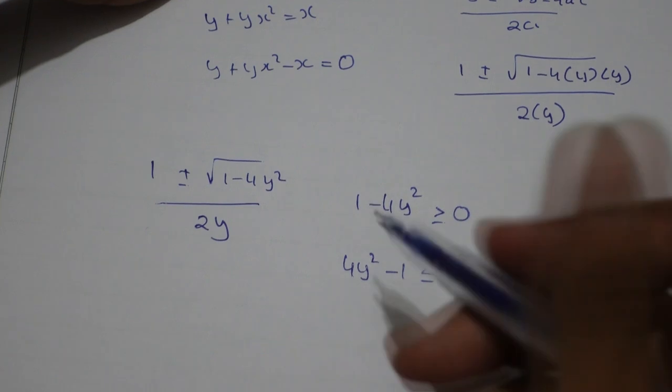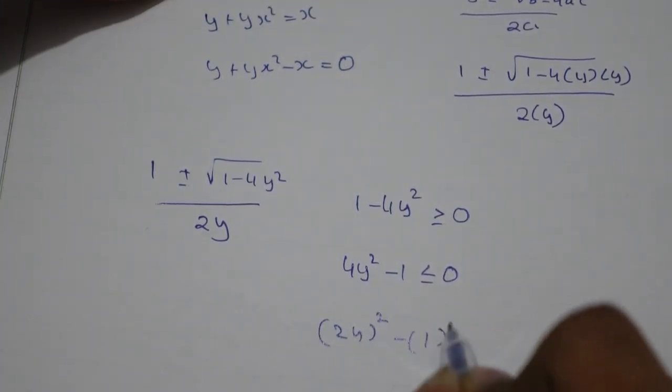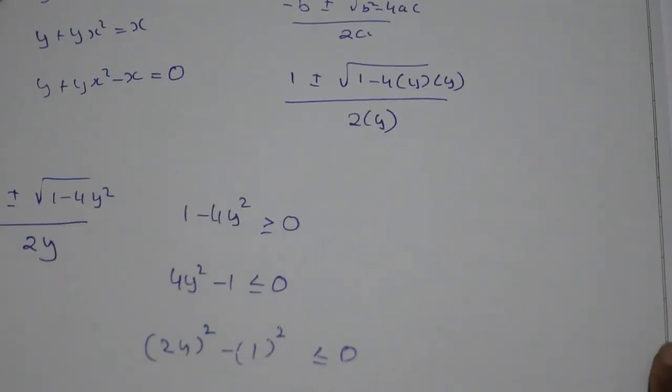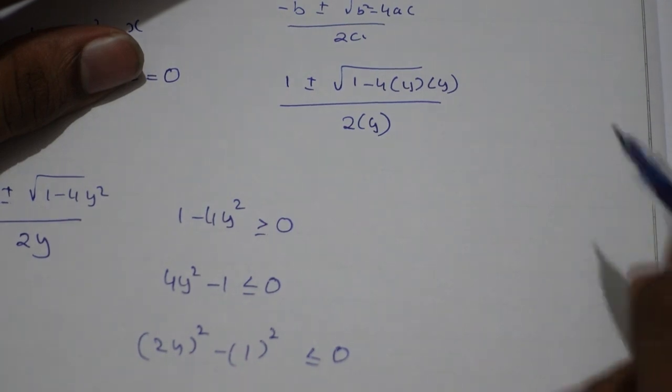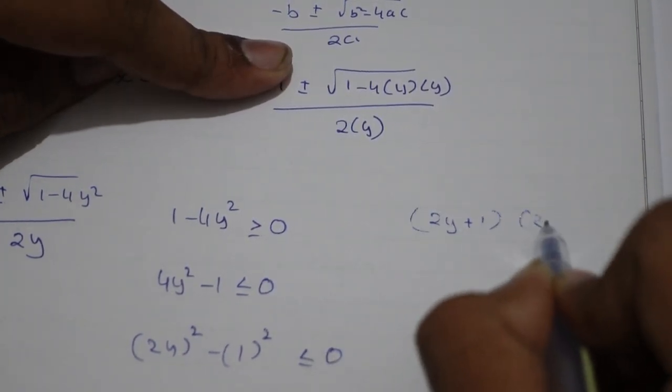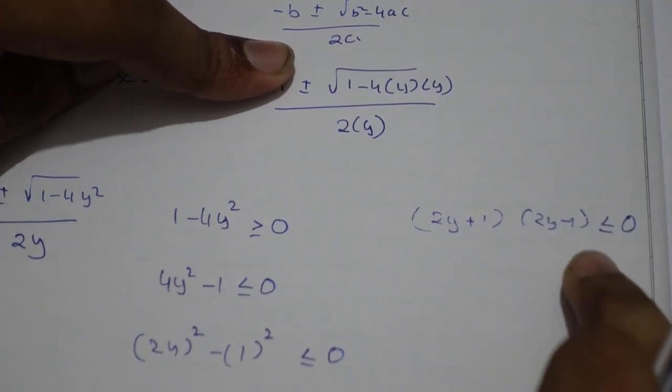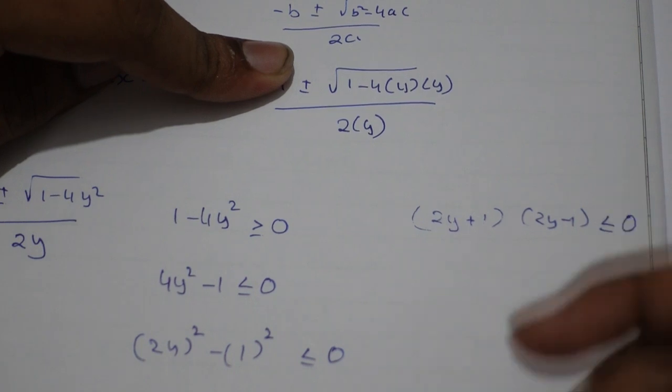You can take 4y² as (2y)² minus 1 as 1² ≤ 0. This can also be written as a² - b² = (a+b)(a-b). So (2y+1)(2y-1) ≤ 0. Whenever there is ≤ 0 in this inequality, we can take between the roots.